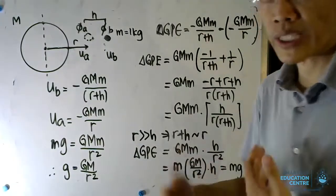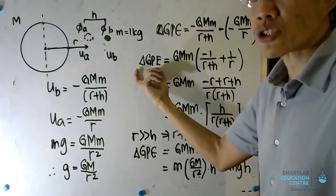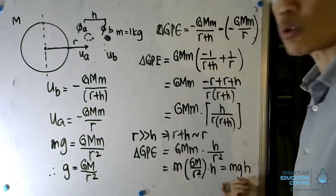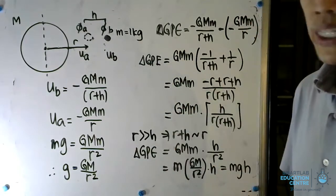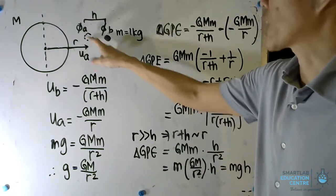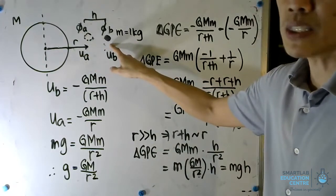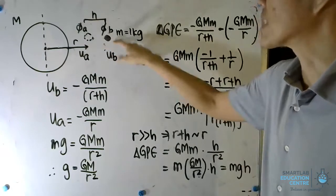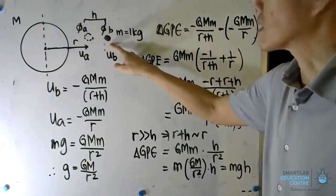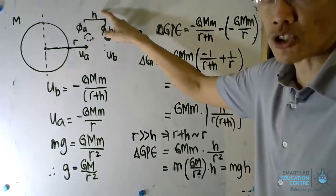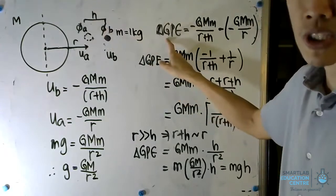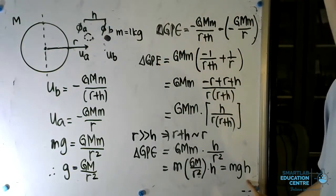Finally, we can now illustrate to you why the change in gravitational potential energy ΔU is equal to mgh. Let us take a look at an example. Say you were to move an object from position A to position B. The vertical height would have increased by h, which means the change in gravitational potential energy should end up as mgh.